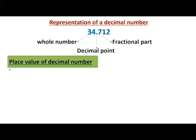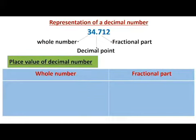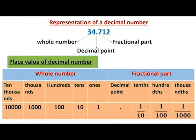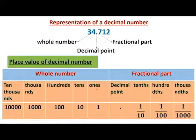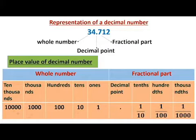Now let us see the place value of the decimal number. I have divided this into two parts — the whole number and fractional part. On the left side of the decimal point we have the whole numbers, with place values as we have learned before: ones, tens, hundreds, thousands, ten thousands, with values one, ten, hundred, thousand, ten thousand.